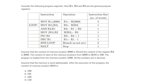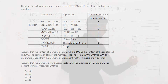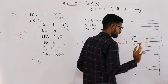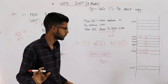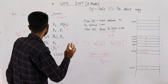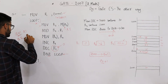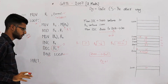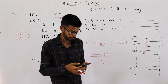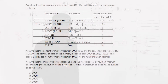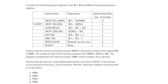The second question asks: assuming memory is word addressable, what is the content of memory location 2010 after execution of this program? As we established, memory location 2010 was never accessed or modified during execution. So its value remains the initial value: 100.